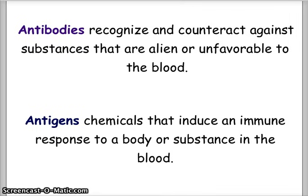To simplify those terms: antibodies are substances in the blood that recognize and counteract against substances that are alien or unfavorable to the blood — so an A antibody would repel B blood. Antigens are chemicals that induce a response in the body, primarily an immune response to a substance that would be negative for the blood.